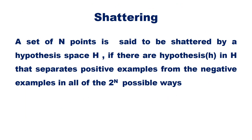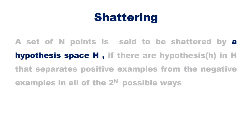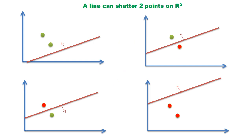What do we mean by shattering? A set of n points is said to be shattered by hypothesis space H if there are hypotheses in H that separate positive examples from negative examples in all of the 2^n possible ways. In the previous example, the hypothesis space is the set of all straight lines in the two-dimensional plane. A specific hypothesis h is a particular straight line. Since we found straight lines that correctly classify the two points in all four possible ways, we say that a line can shatter two points on a two-dimensional plane.